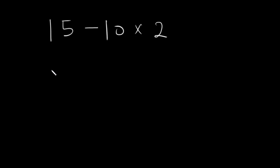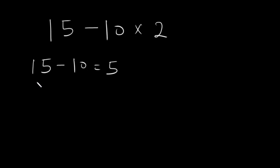For the first approach, let's begin to solve from the left. 15 minus 10 is equal to 5, and 5 times 2 is equal to 10.